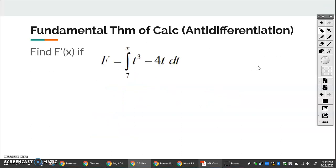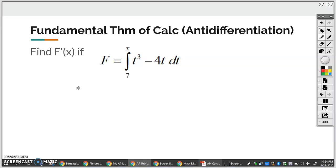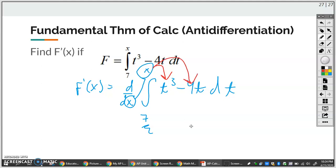...all you've got to do is plug in the variable on the top into the function. So let's take a look at an example. Find capital F prime of X if capital F is equal to this integral. So capital F prime would mean that we're taking the derivative with respect to X of this integral. And as long as everything matches up, we've got the variable matching here, constant on the bottom. All you have to do is plug in the variable on the top into the function. So this would equal X cubed minus 4X.